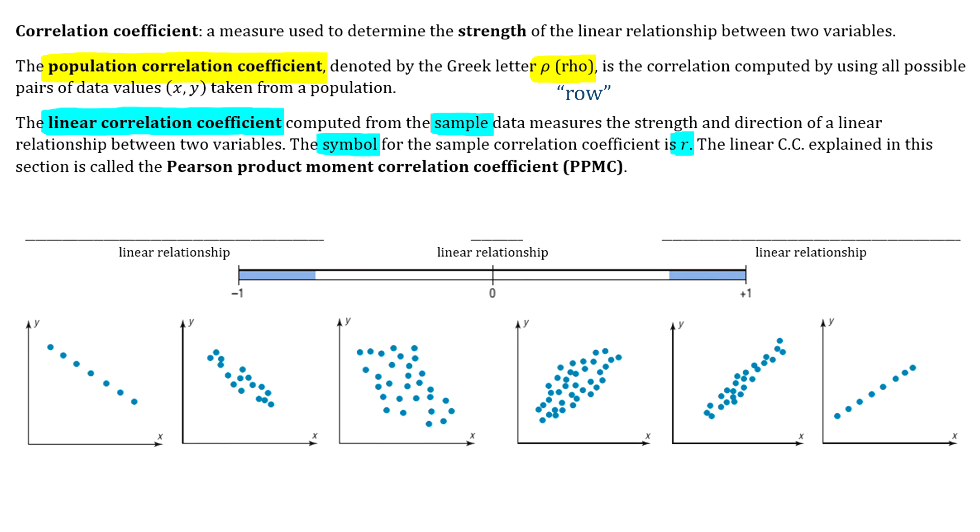Now there are different correlation coefficients and ways of getting them. The one that we're specifically using in this section and the one that your textbook specifically wanted to use is called the Pearson Product Moment Correlation Coefficient. You really do not need to know that for any other reason than there's one question on your homework about what it's called. So just know it for that, and then I'm never going to refer to that again. I'm just always going to call it the linear correlation coefficient.